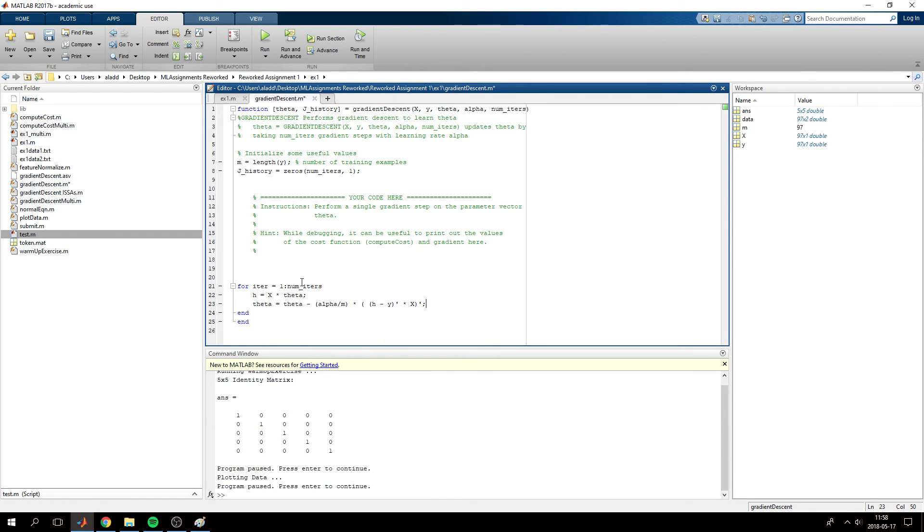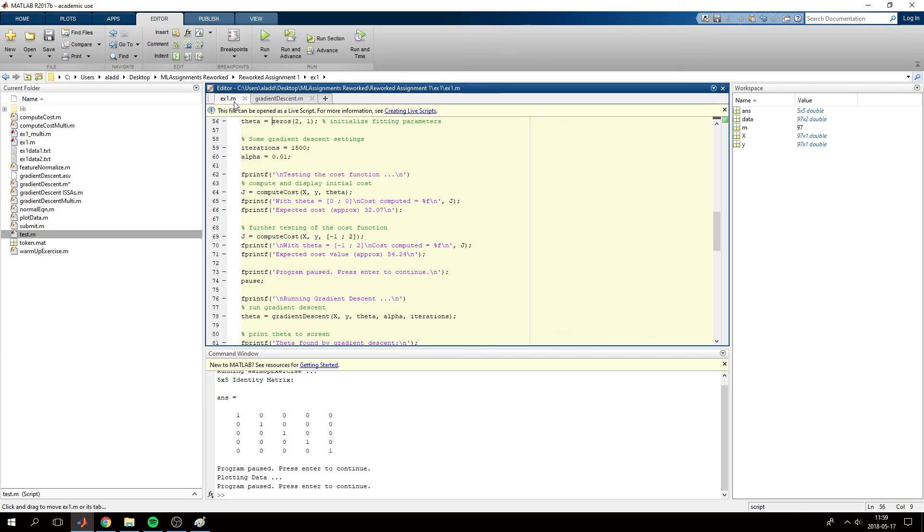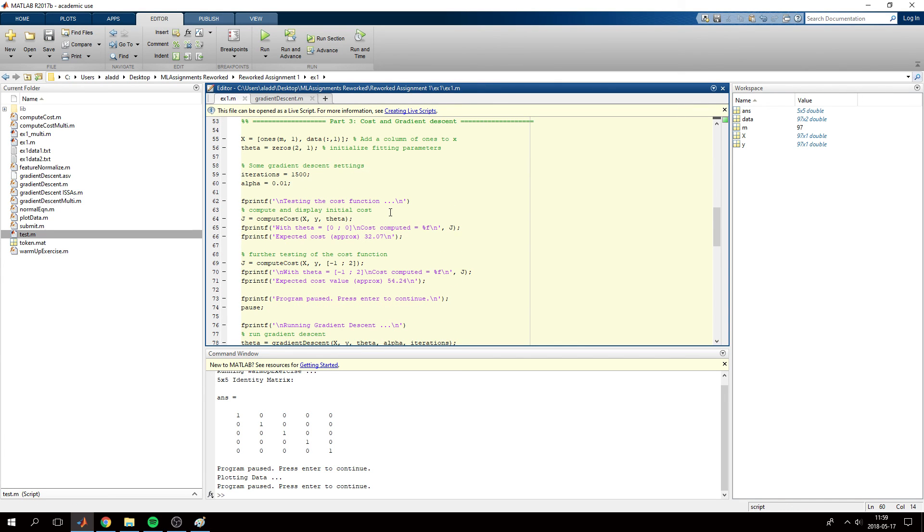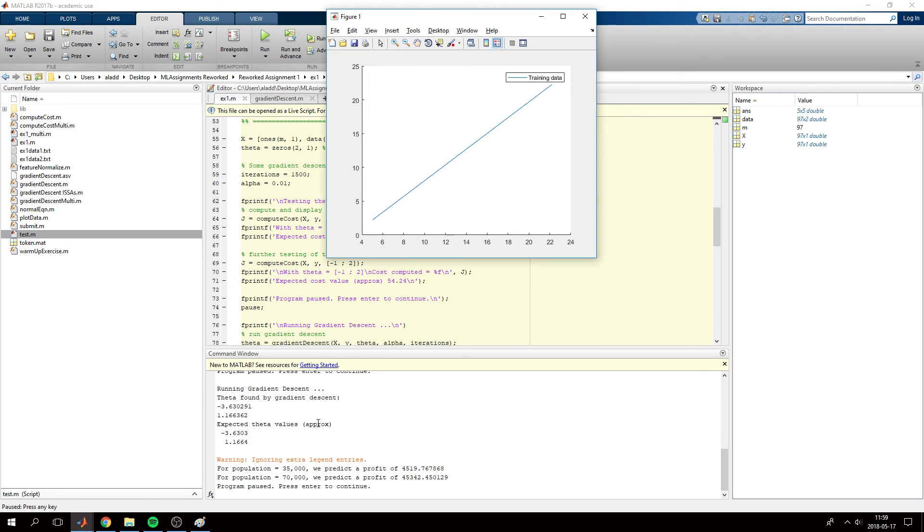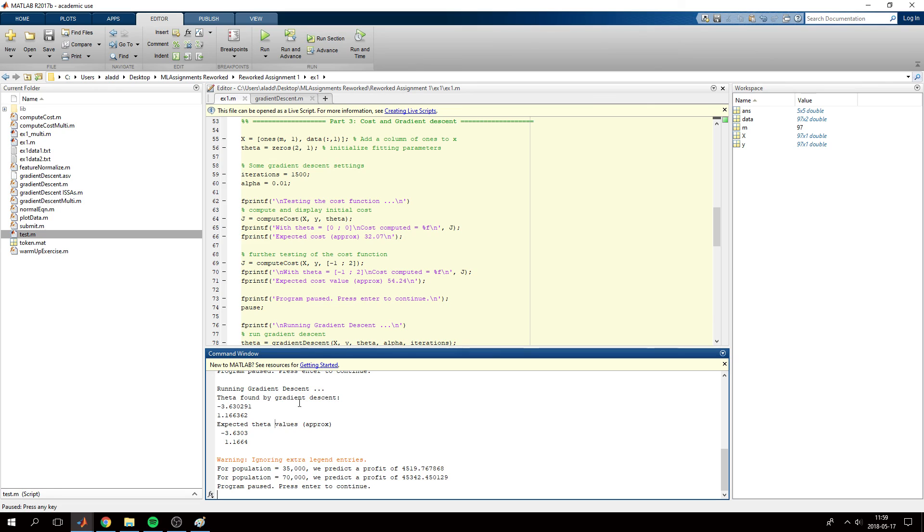You might be wondering about this for loop—this for loop will be how many iterations gradient descent will run, how many times will theta be updated to hopefully converge to the global minimum. Let's try to run this now and see if we get correct values. Our gradient descent function seems to find the same as the expected theta values, which means that we have implemented gradient descent correctly. Thank you for watching this video and I hope you have a great day.